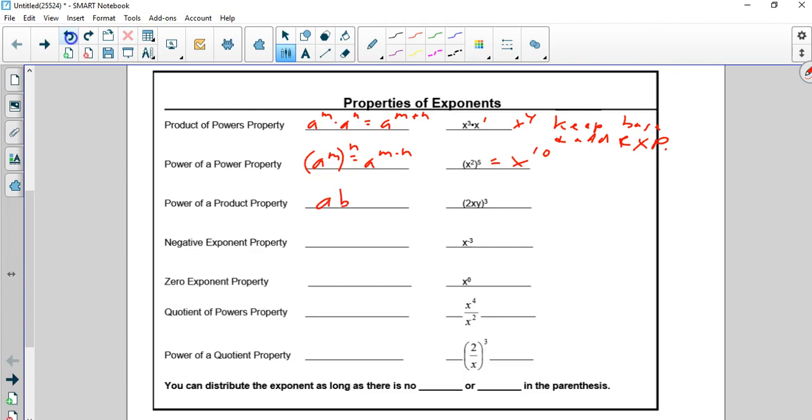Power of a product property. If a, b is in parentheses and it's raised to the m, this m goes to each of those. And if you think about the previous rule, this is really a 1 here and a 1. So you're going to multiply and get a to the m and b to the m. It distributes, basically. So this 3 is going to go here, here, and here. So it's going to be 2 to the 3rd, x to the 3rd, y to the 3rd, which would be 8x cubed y cubed.